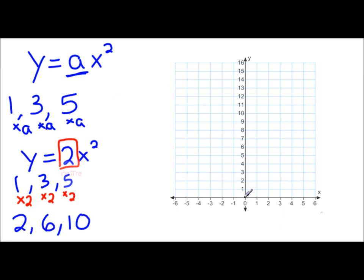So how do we graph that? Well, let's start at the vertex, 0, 0. Last time we went over 1, up 1. This time we're going to go over 1, up 2. Over 1, up 6. And over 1, up 10, which is off our graph.